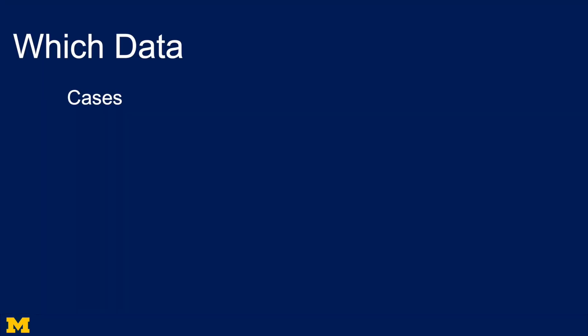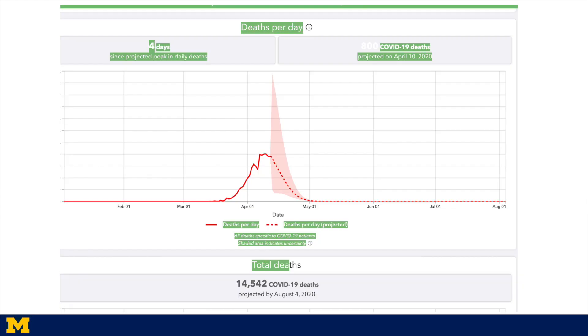When fitting this curve, what data do you use? You might use the number of cases, however we haven't had much testing so case data isn't reliable. We could also use hospitalizations, but we don't know if people who have the disease have necessarily gone to the hospital. So the best data at this point is the fatality data, because you've got a good clean count of the number of people who've suffered fatalities, and you can infer how many are the result of the coronavirus.